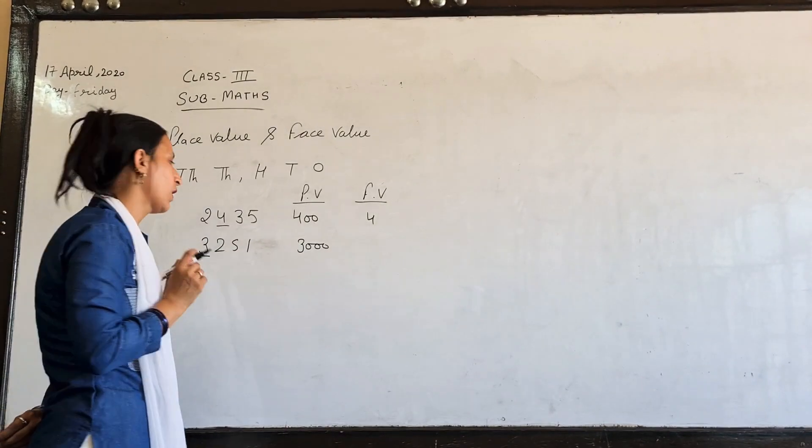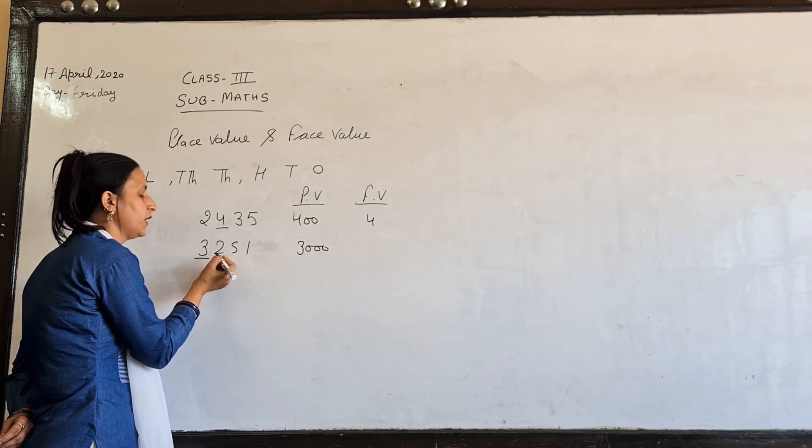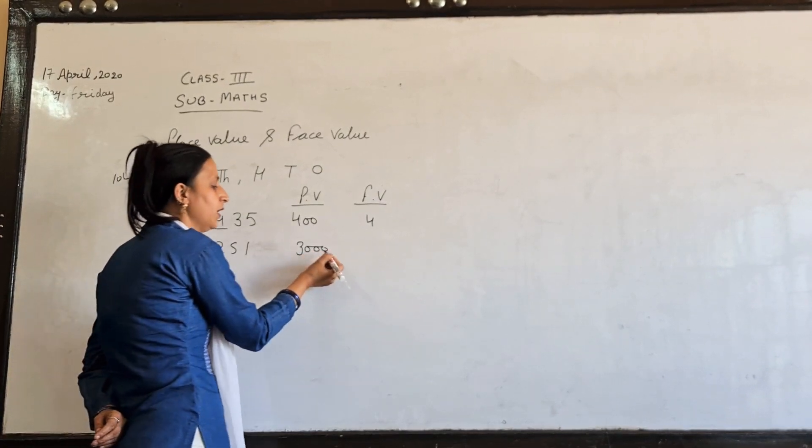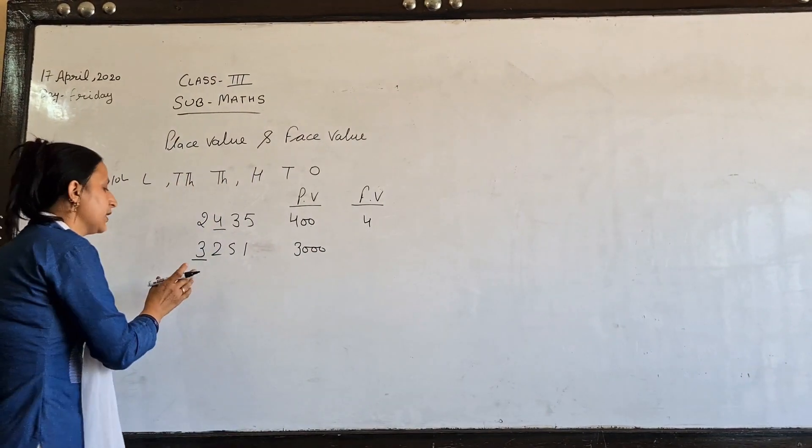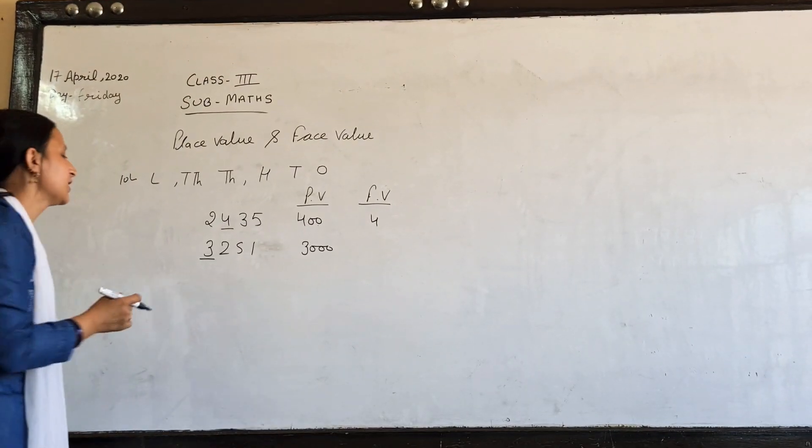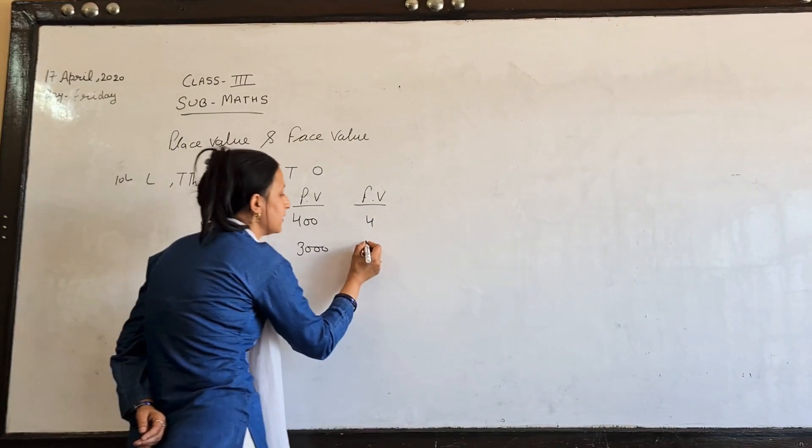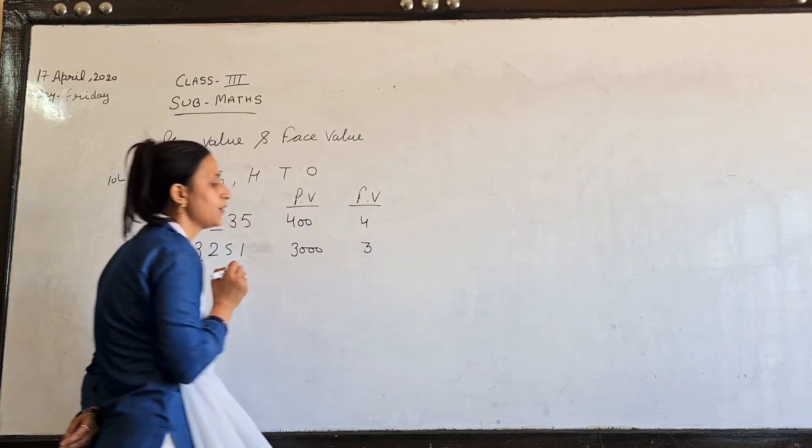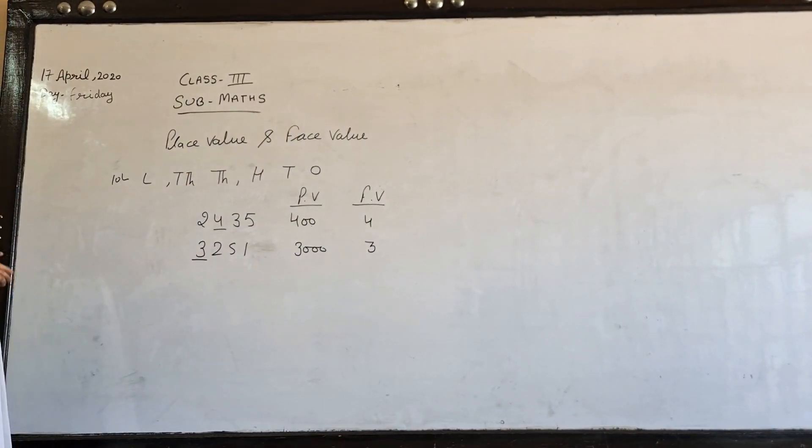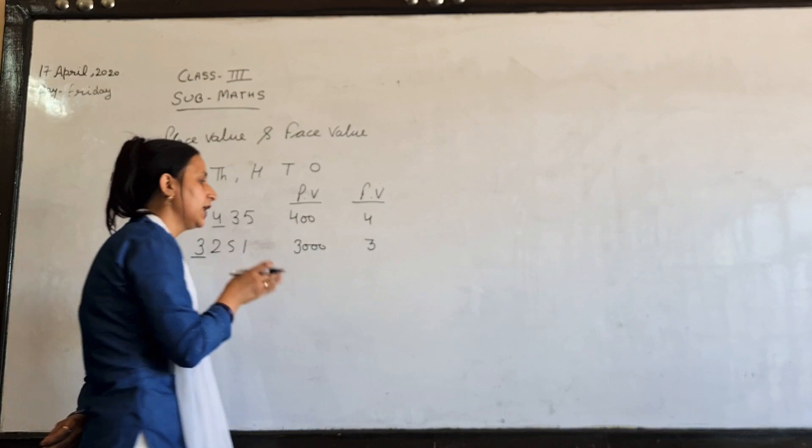So 3's place value is 3,000. When you go to face value, in face value, the value is compared to 0. So in face value, the value is the digit itself.